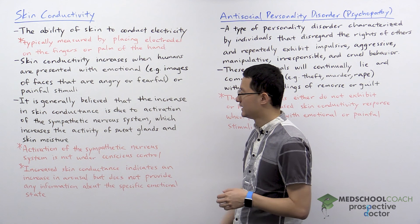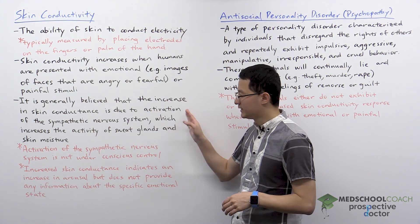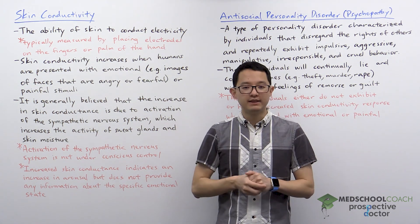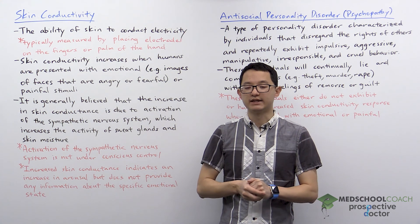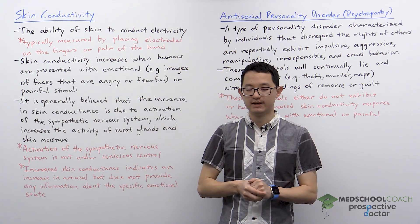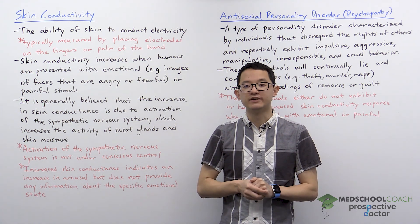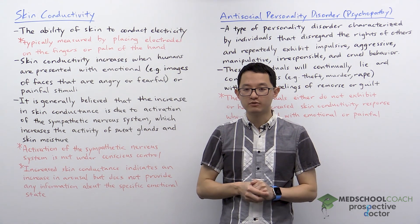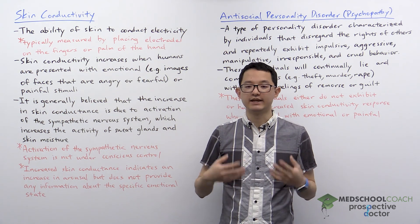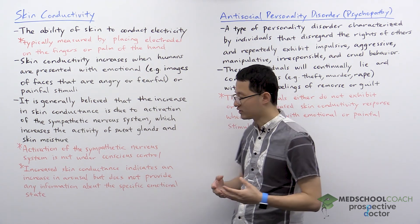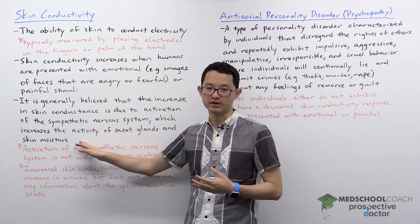This increase in skin conductivity is believed to be due to the activation of the sympathetic nervous system. This will increase the activity of sweat glands, which secrete sweat, and that is going to consequently increase skin moisture.